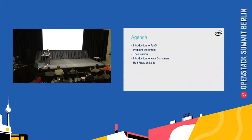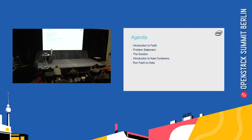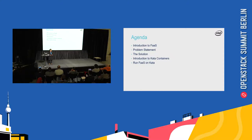So the agenda for my talk: I will briefly discuss how FaaS evolved and what FaaS actually is, and what the advantages of using FaaS are in today's cloud computing domain, telcos, or anywhere. Then I will talk about the problem statement that we are trying to fix with Kata Containers, followed by the solution — Kata Containers — and finally how we could approach running FaaS with Kata Containers.